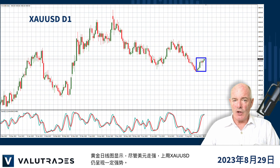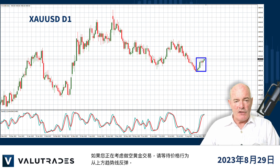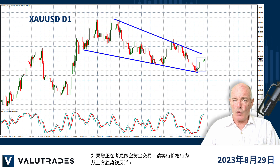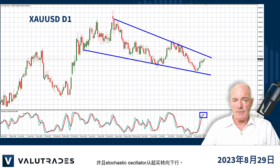The daily chart on gold shows us some strength in XAU/USD in the last week despite the strong U.S. dollar. If you are considering a short trade in gold, wait for price action to bounce off this upper trend line and the Stochastic Oscillator to turn down from overbought.